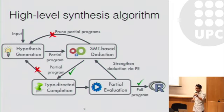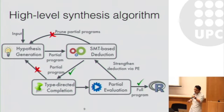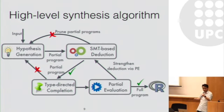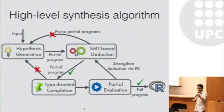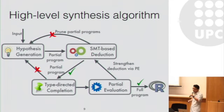Our system iteratively repeats this process until we find a program that is type-checked and satisfies the input-output constraint. This is the big picture of the synthesis algorithm. Now I'm going to walk through each part in a bit more detail using a simple SQL domain, which is easier to understand.